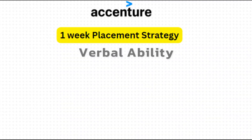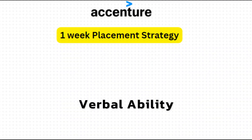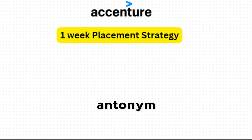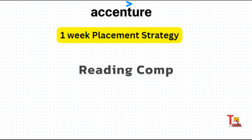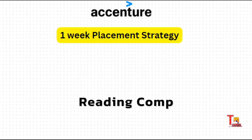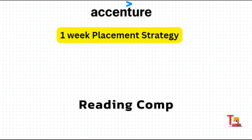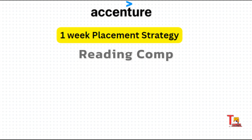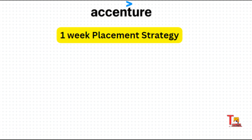Let's start with verbal ability. In this section you will have 17 questions from different chapters, but most questions are asked from synonyms, antonyms, sentence correction, articles, tense, spotting errors, voice change, etc. If you prepare these chapters your preparation will be sorted. You will also have reading comprehension questions with around two to three marks allocated. Despite their importance, I recommend leaving those questions for last since most of them are time-consuming.